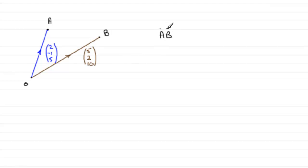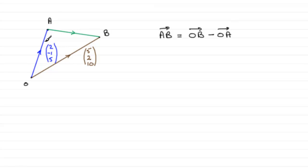In this first question we've got to work out what the vector A to B is. If I wanted to go from A to B — let's mark that in green here — it's a standard result: it's always O to the last letter minus O to the first letter. A to B is A to O followed by O to B, but going in the reverse direction it's minus O to A, so you get minus OA plus OB, which you can write as OB minus OA.